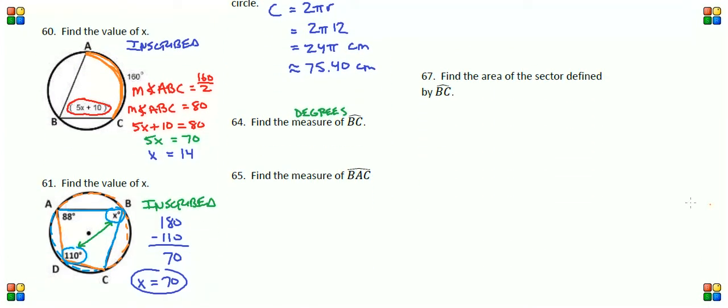This one's actually a pretty simple problem. I'll write this out. The measure of arc BC is equal to 155 degrees because that is the measure of the central angle that intercepts arc BC. So measure of arc BC, 155 degrees.